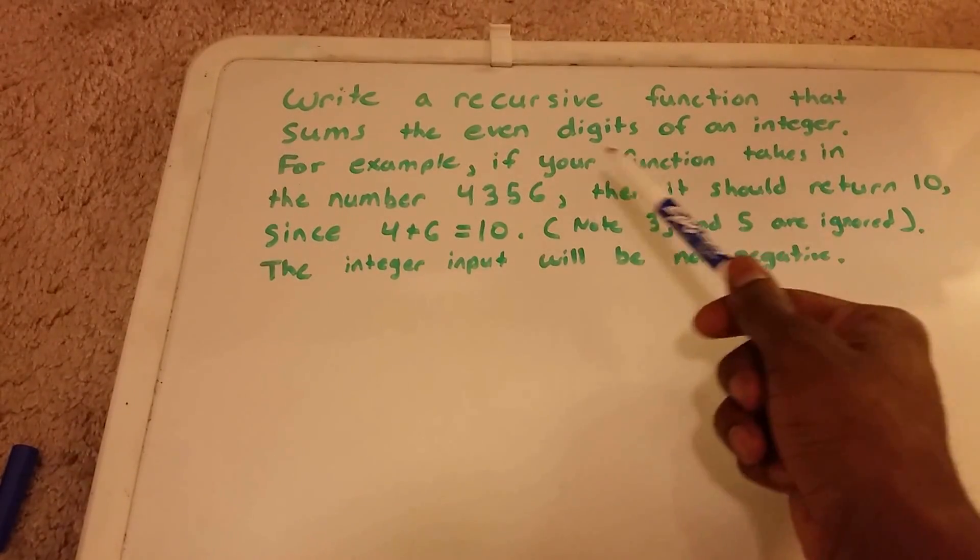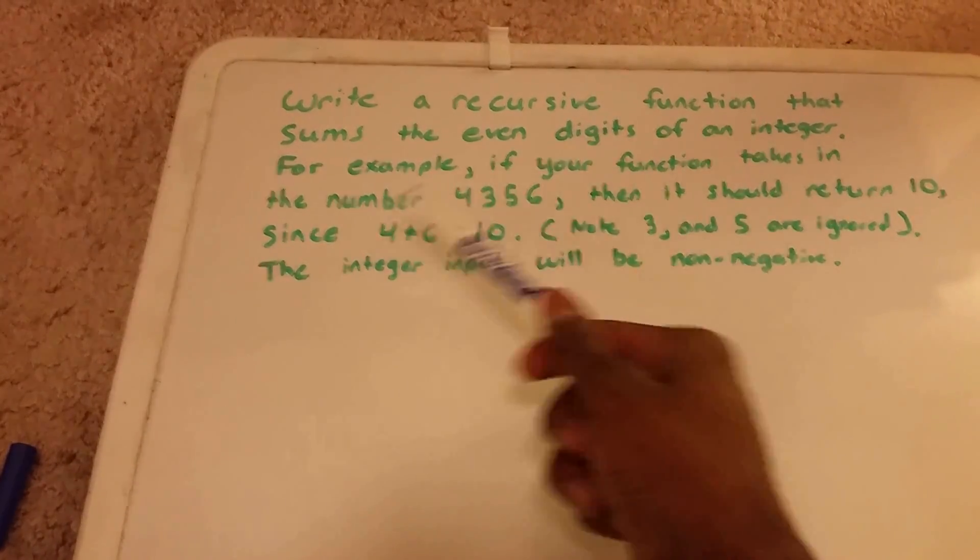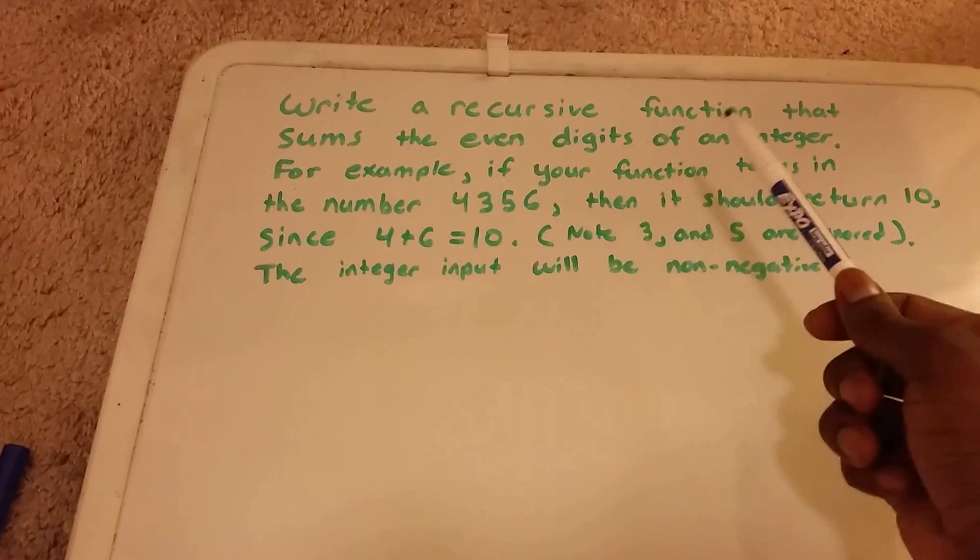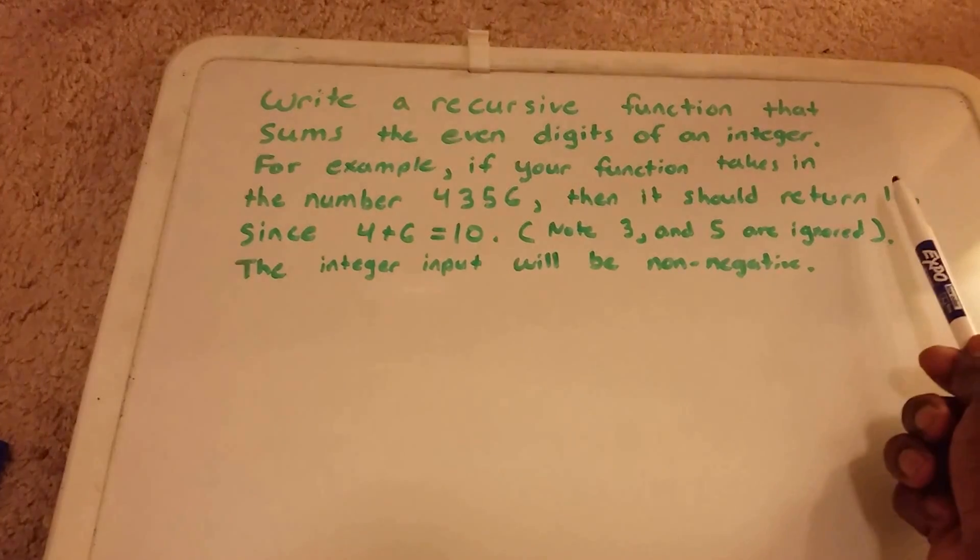An example of this is our function is going to take in a number like 4356, and then it will return the number 10.